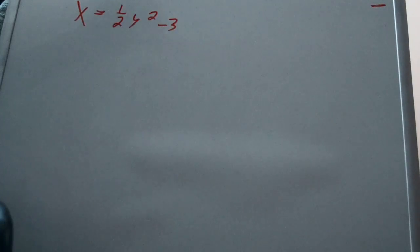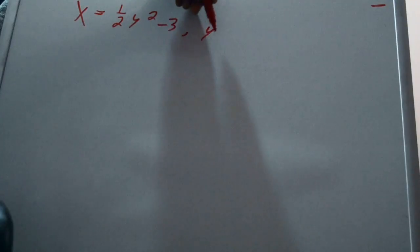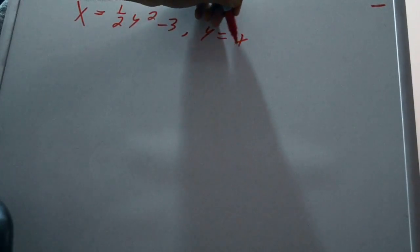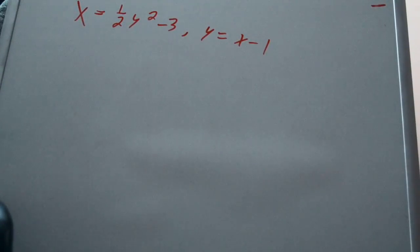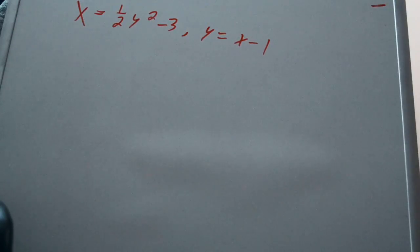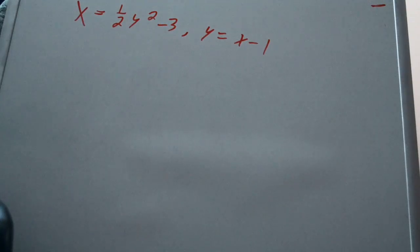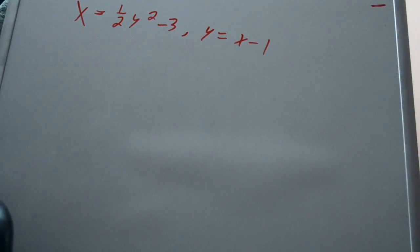x equals one-half y-squared minus three, and y equals x minus one. I'll give you a second so you can find the area if you choose to do so, or I'll show you how to do it right now. What you want to do first is set the equations equal to one another so you can get the points where they intersect.